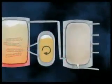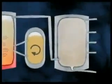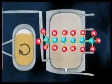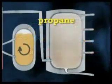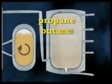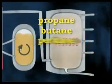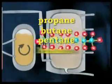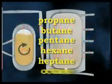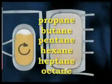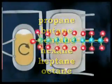The molecules most formed are the smaller alkanes used in petrol, such as propane, butane, pentane, hexane, heptane and octane — the components of liquid petroleum gas.